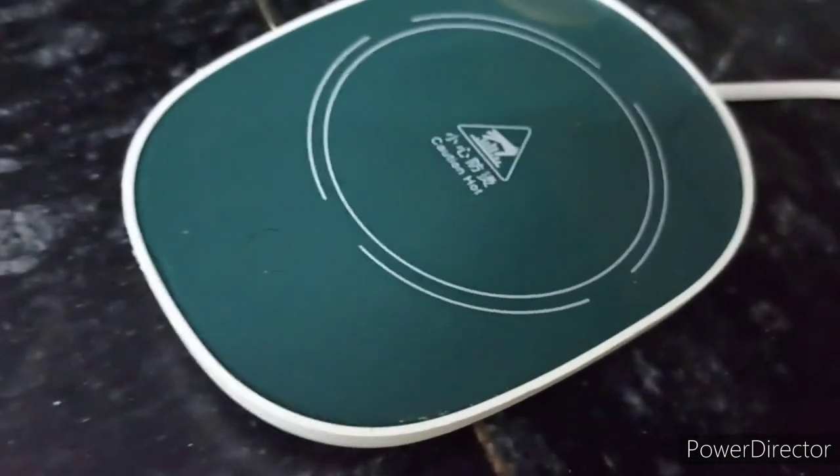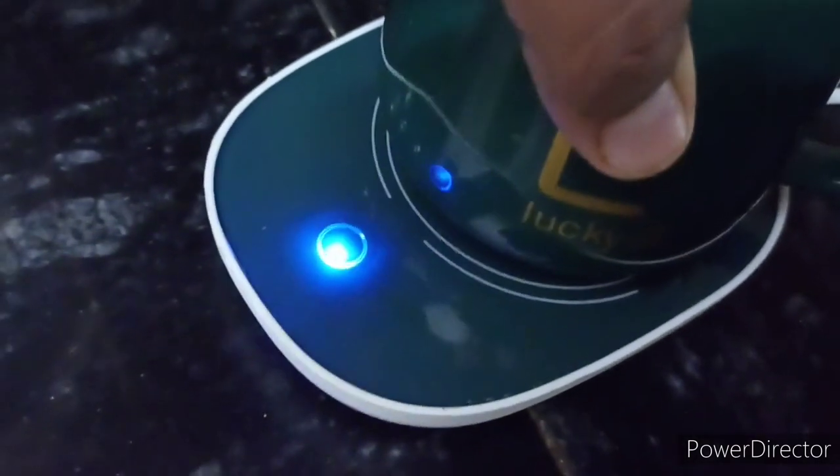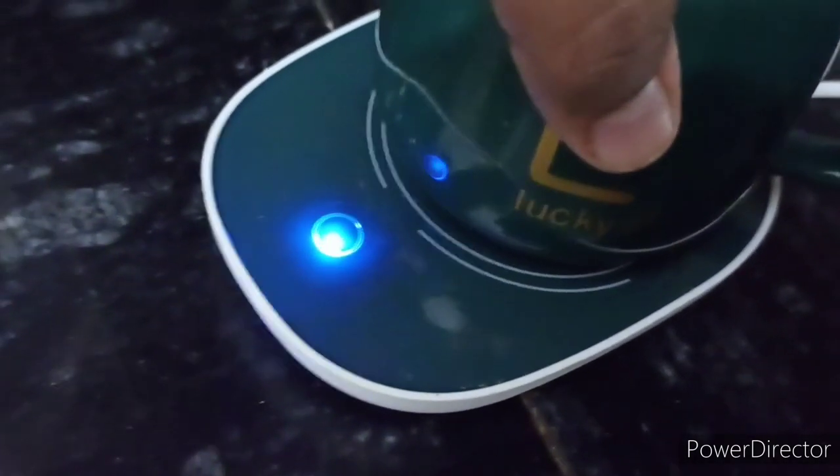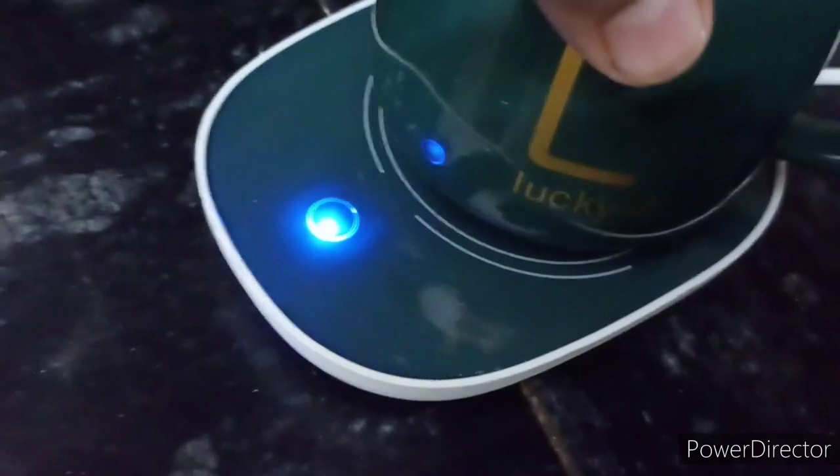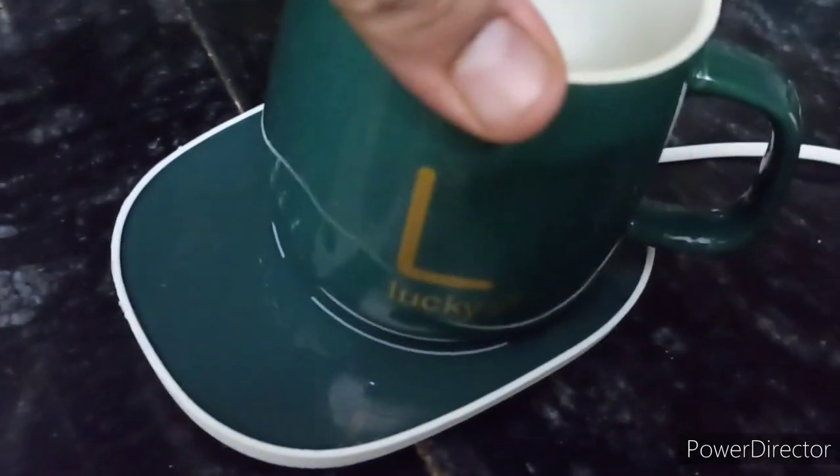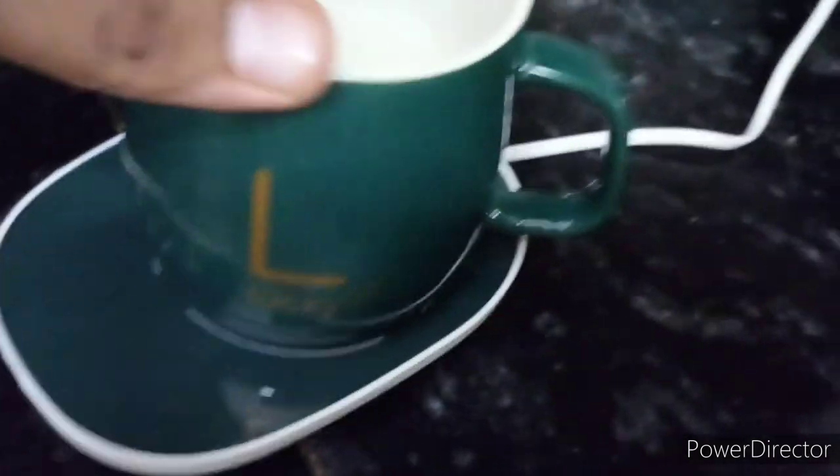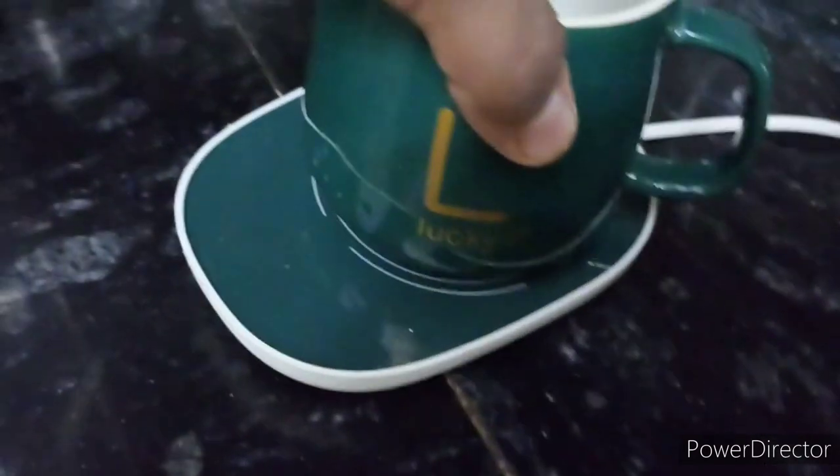Then I realized that until the cup is placed on top, the button should be pressed. It has pressure on it, so the button needs to be pressed by the cup. Until the cup is on top, the light will be on, which means it is working.